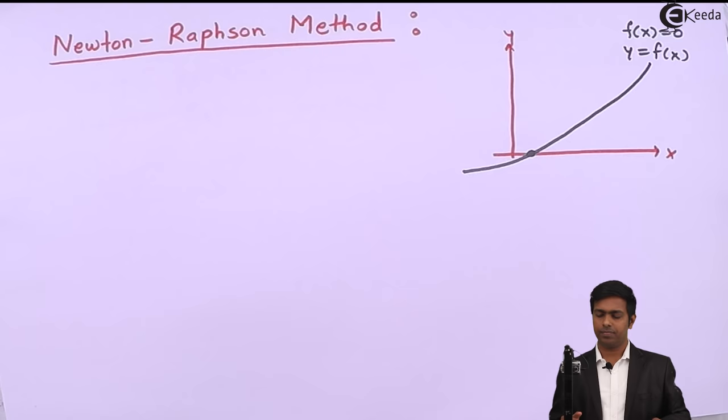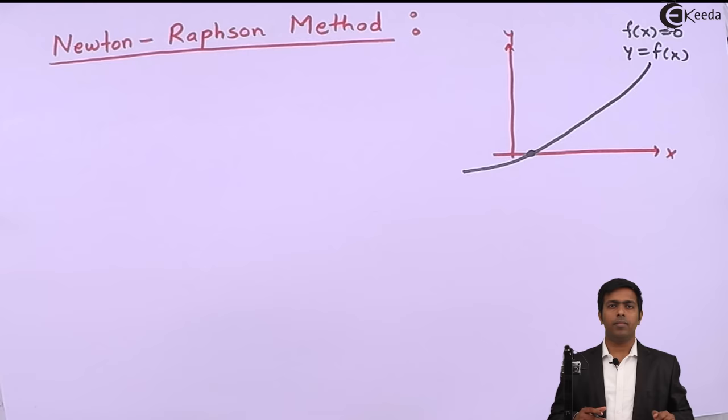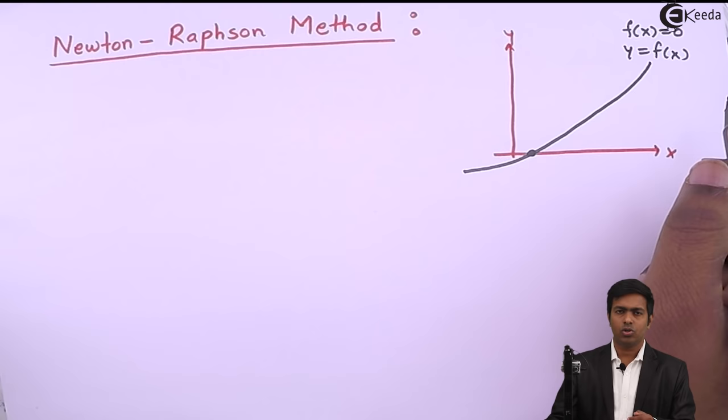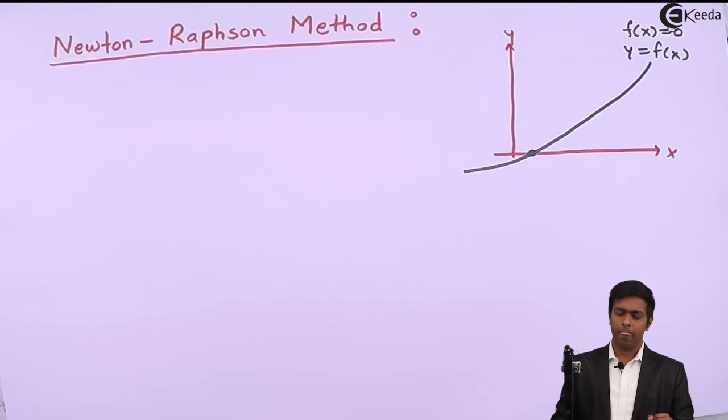To get this value, we are going to use the algebraic method of Newton-Raphson. If you want to use the geometric method, it is done by taking the help of a tangent — we generally use the method of tangent to get the roots geometrically. But here we are going to use the algebraic method.